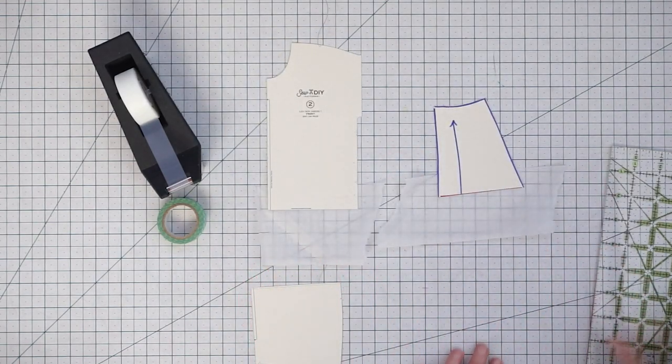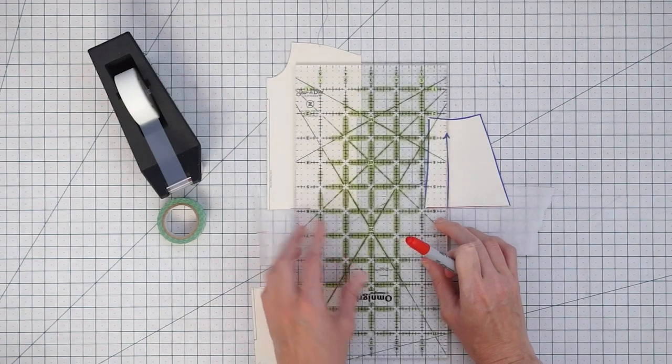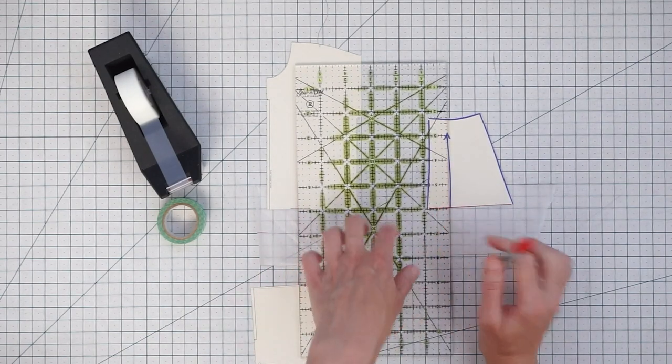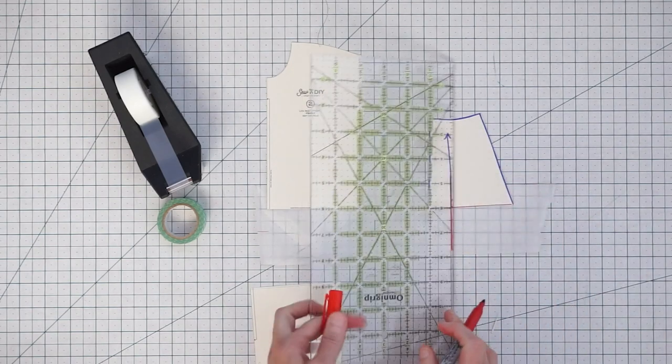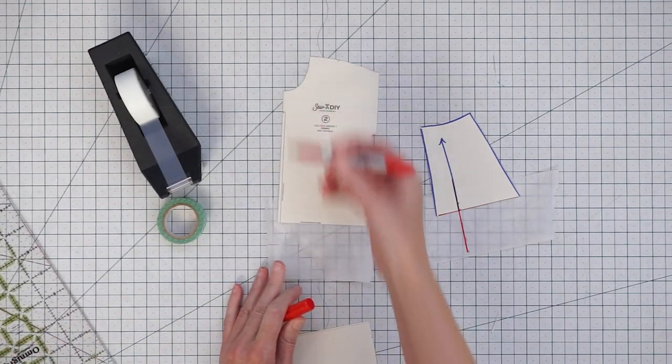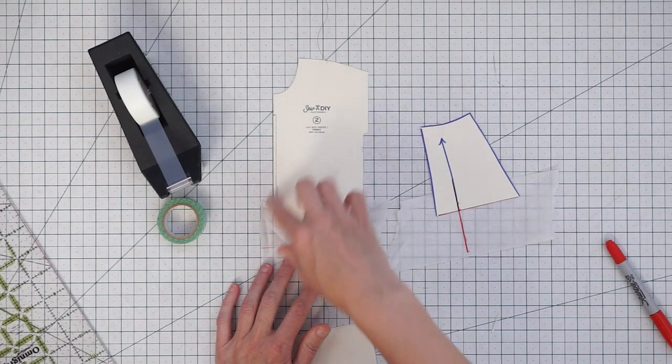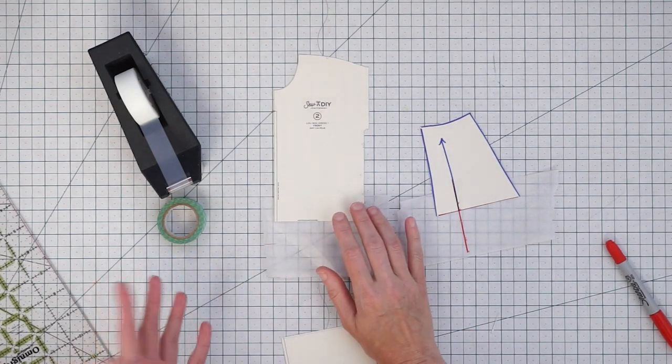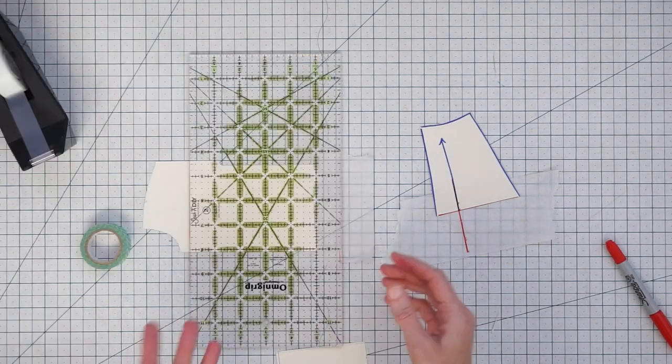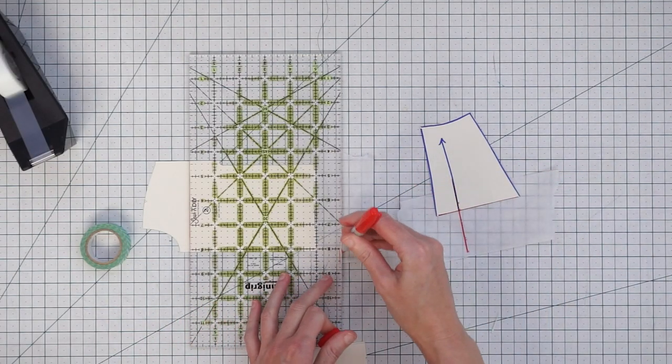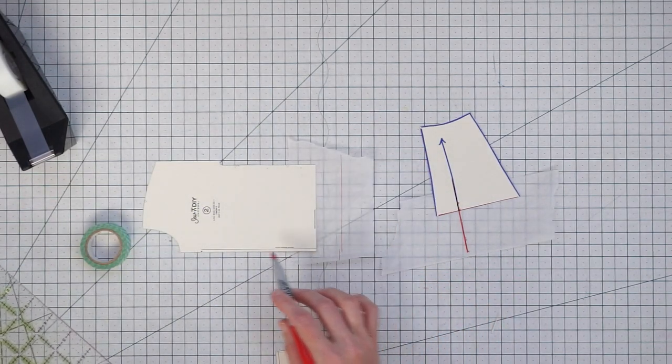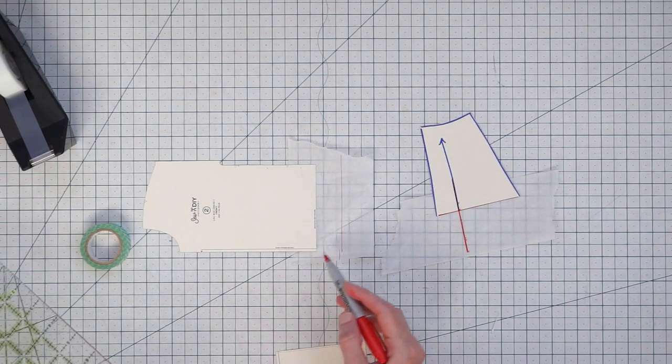Now what you want to do is extend this grain line. So we need this as a guide to help us keep everything aligned. So just draw on an extra line and here we're going to be using this folded edge of our dress because this is what our grain line is for this pattern. And I'm going to use this straight edge of my cutting mat to make sure I keep it aligned. Additionally we want to draw a guideline for how much we want to lengthen the pattern. And this line is going to be parallel to our cut line and perpendicular to the fold line or grain line.